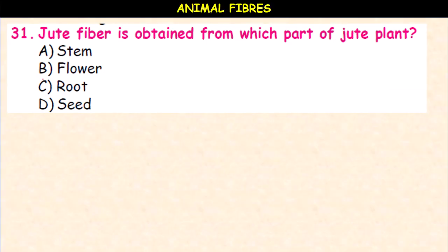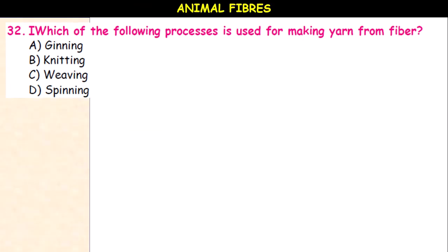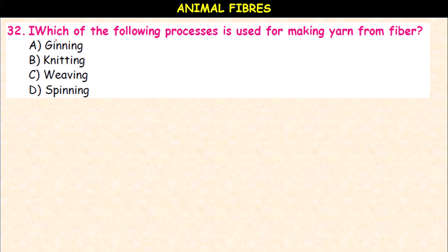Cotton fiber is obtained from seeds by which process — spinning, rolling, picking, or ginning? It is ginning. Jute fiber is obtained from which part of the jute plant — stem, flower, fruit, or seed? It is the stem. Which process is used for making yarn from fiber — ginning, knitting, weaving, or spinning? It is spinning.